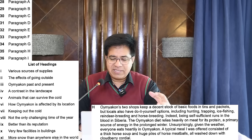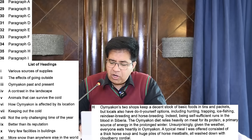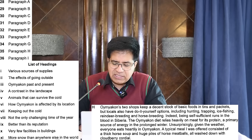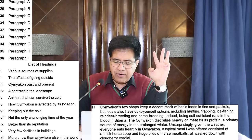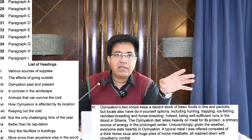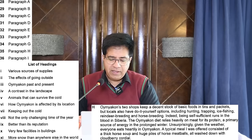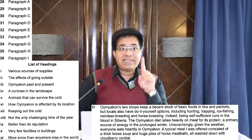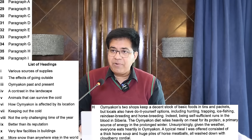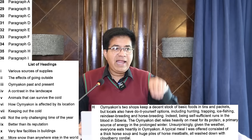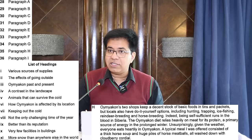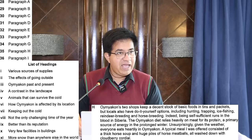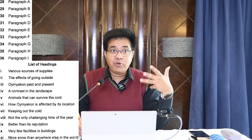Paragraph H: 'Oymyakon's two shops provide supply — two shops keep a decent stock of basic foods in tins and packets, but locals also have do-it-yourself options including hunting, trapping, ice fishing, reindeer breeding, and horse breeding.' What is that? Various sources of supplies. There is a trap — they talk about reindeer breeding and horse breeding, but have they mentioned animals that can survive the cold? No. Those who don't understand see the word 'horse' and pick heading five — it's not the word, it's the idea.